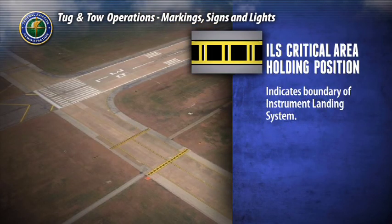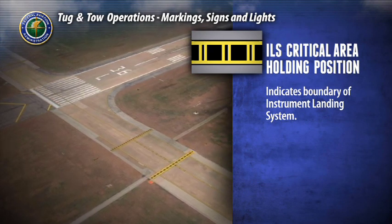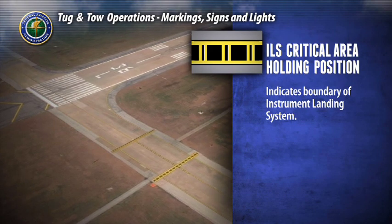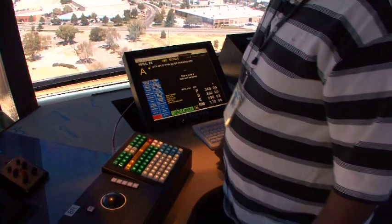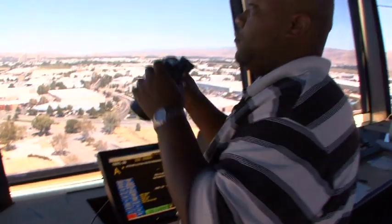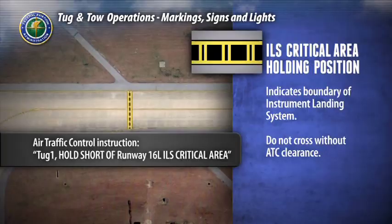The ILS critical area holding position marking indicates the boundary of the ILS critical area, or instrument landing system. If the ILS is in use due to weather or other conditions, do not cross this marking without air traffic control clearance. Taxiing beyond this point may interfere with the ILS signal to approaching aircraft. If the ILS is in use, you will receive a hold short instruction from air traffic control — for example: 'Tug 1, hold short of runway 16L, ILS critical area.' You will hold at this position until air traffic control gives you instructions to proceed.